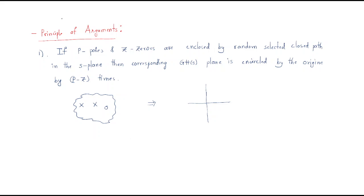Now, what is the principle of arguments? If P poles and Z zeros are enclosed by a randomly selected closed path in the S-plane, then the corresponding GH(s) plane is encircled by the origin P minus Z times. The number of encirclements is determined by the number of poles and zeros enclosed within that selected path.